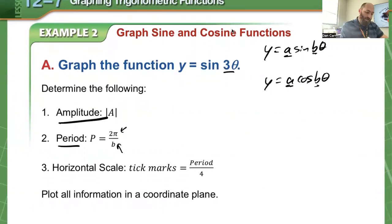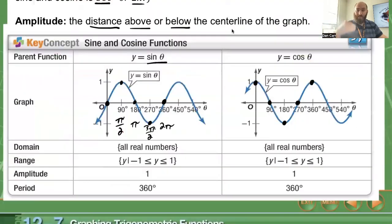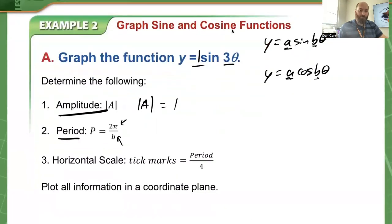Period follows this idea: if we take 2 pi divided by the b value, that tells us the length of our period. When we look at this example, y equals sine of 3x, the amplitude is just 1, the absolute value of the amplitude. Our period is going to change. We take 2 pi divided by 3. So that is the length of one full period: 2 pi over 3.